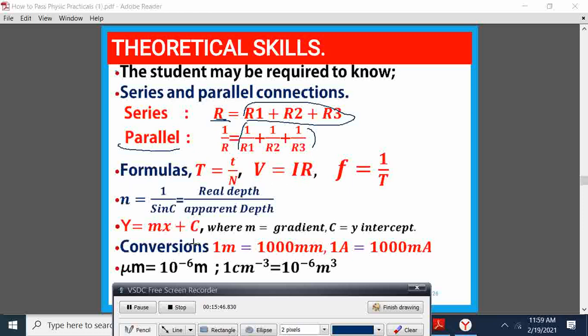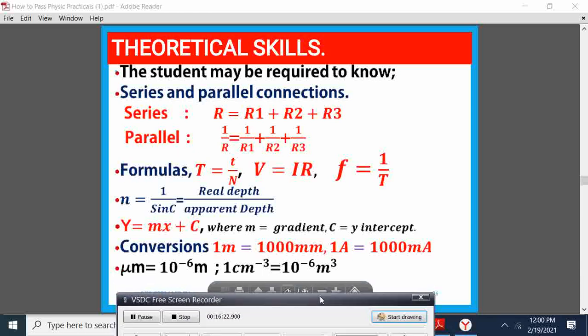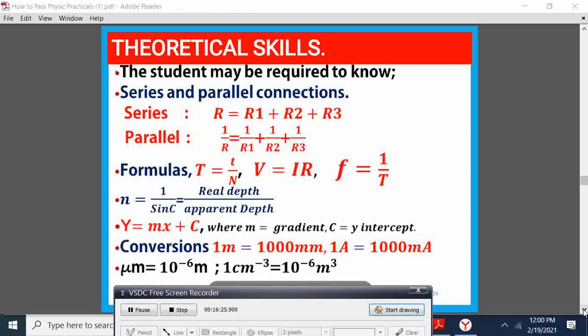We also have some formulas for finding current, frequency, period. Also, the formula for optical, that is the real or apparent sine incidence divided by the sine refracted. And then we have finding the y equals mx plus c. We have conversions: one meter to millimeters, amperes to milliamperes. So these are some of the basic skills that you'll be combing yourselves on as you prepare for this paper.